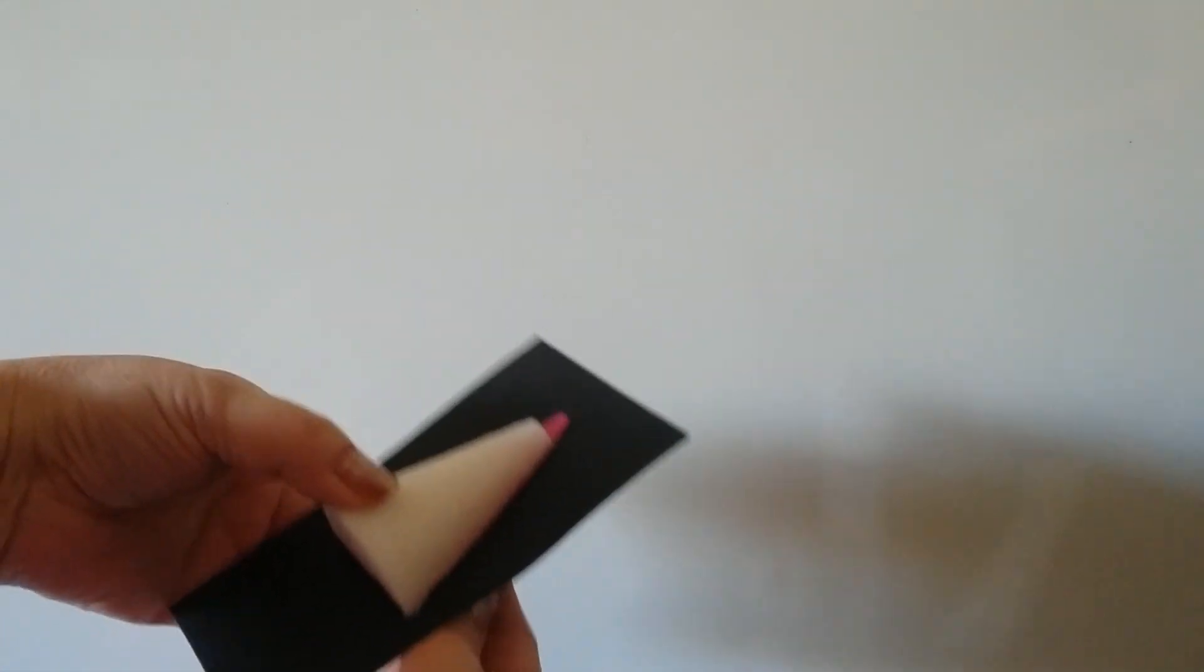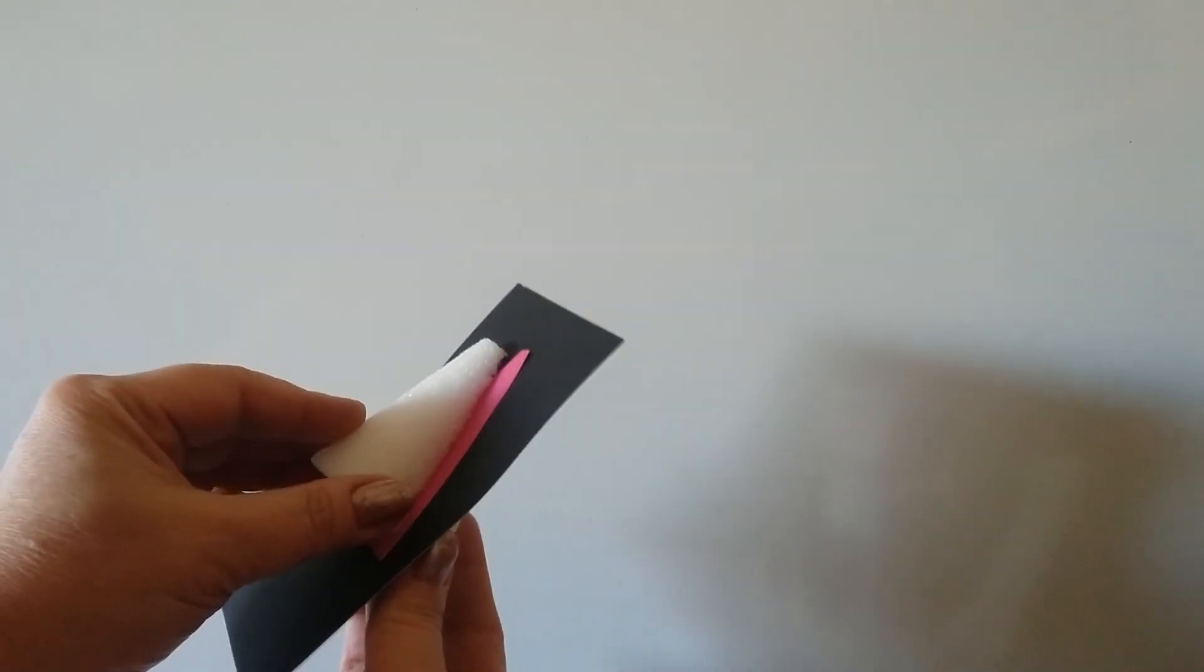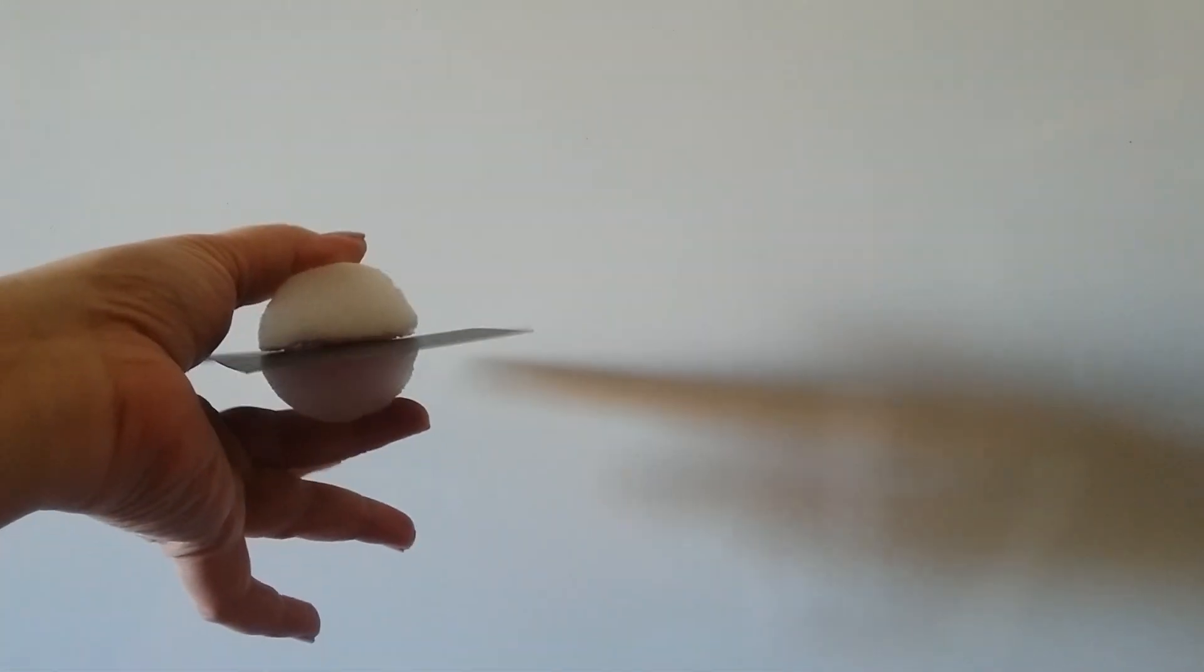And here I have a foam cone. And it's being sliced with the black poster board as the plane. And if we slice it perpendicular to the base, we're going to get a triangle. See, it's the cross section.